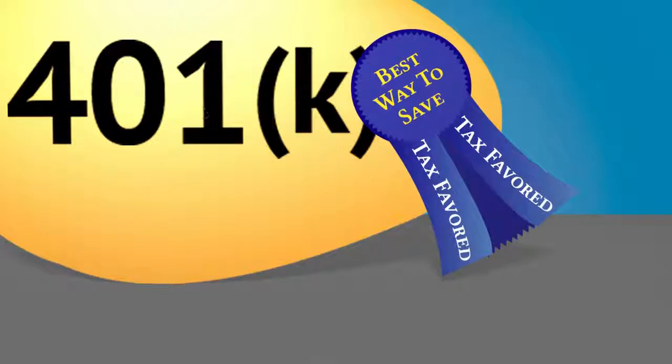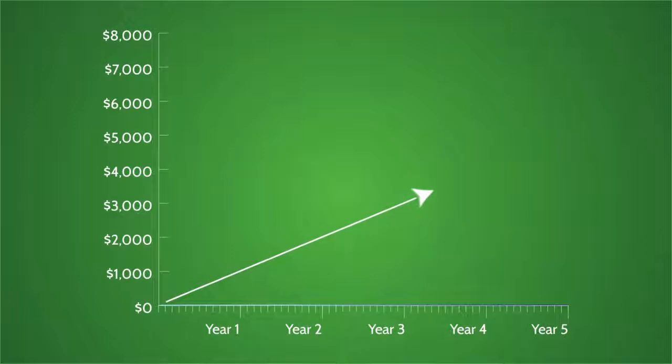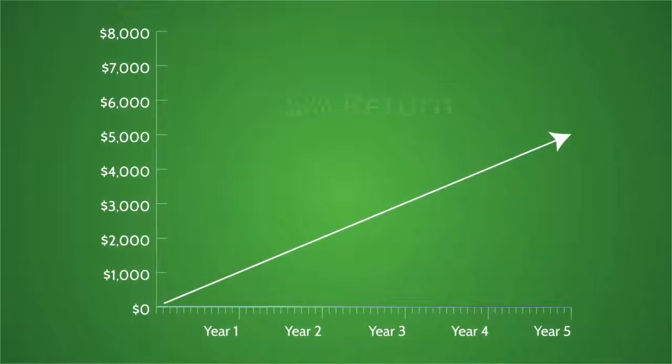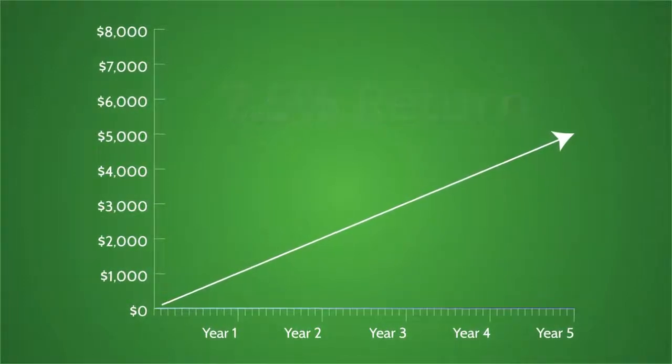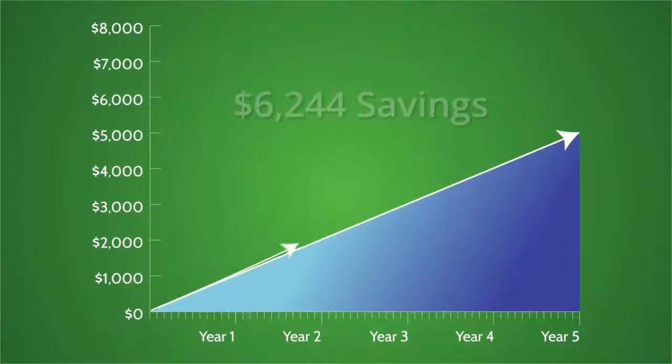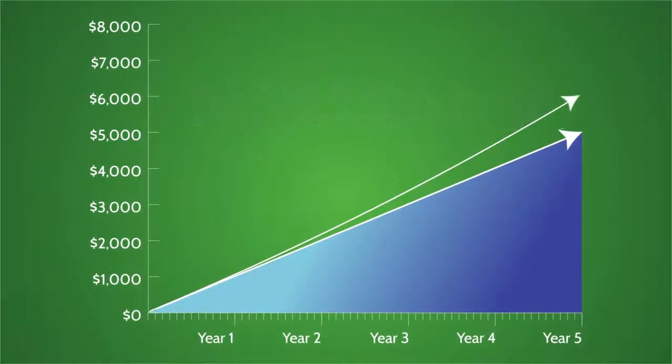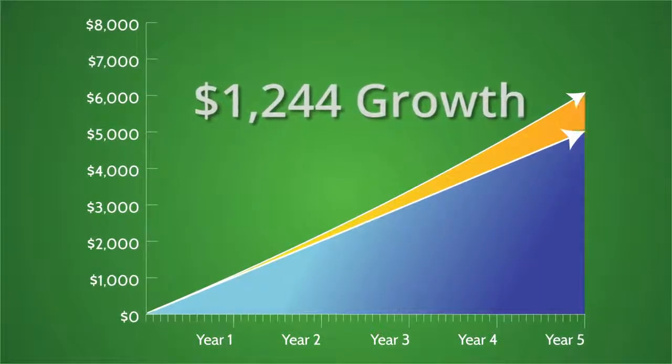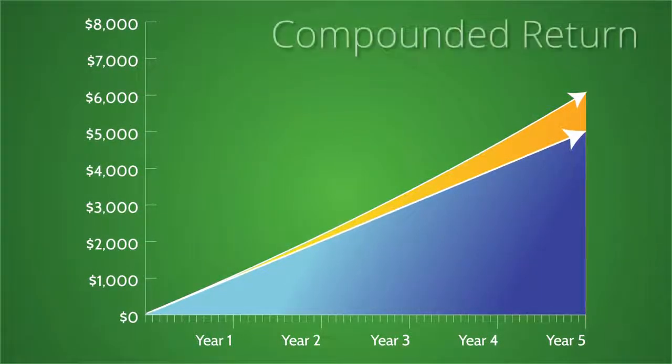An example will help to explain compounding. Let's say you invest $1,000 at the start of each year for five years and earn 7.5%. You will have invested $5,000 and your account will have grown to $6,244. The $1,244 growth of your investment is your compounded return.